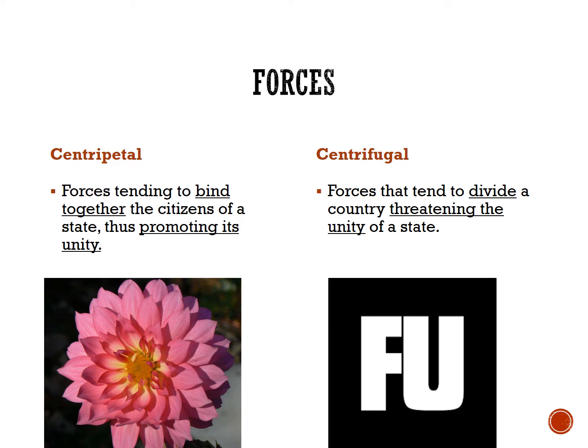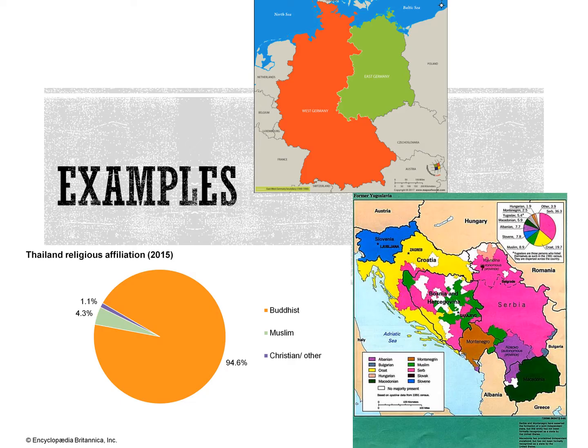Now that we know the definitions, let's look at some examples and use this as an opportunity to practice our FRQ writing skills. In your notes, make your claim about whether they are centripetal or centrifugal forces, and then explain how or why these examples unify people or threaten unity.